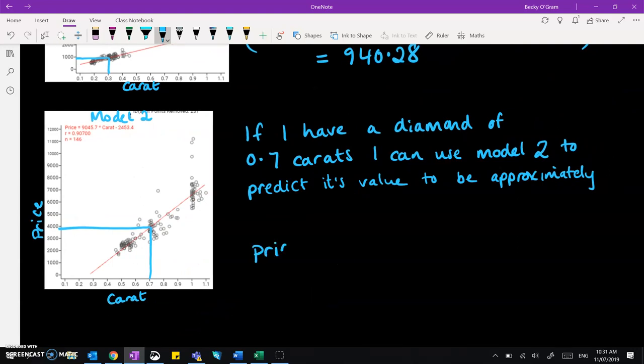The price is 9045.7 times 0.7, then take away 2453.4. Popping that into the calculator, we get 3878.59.